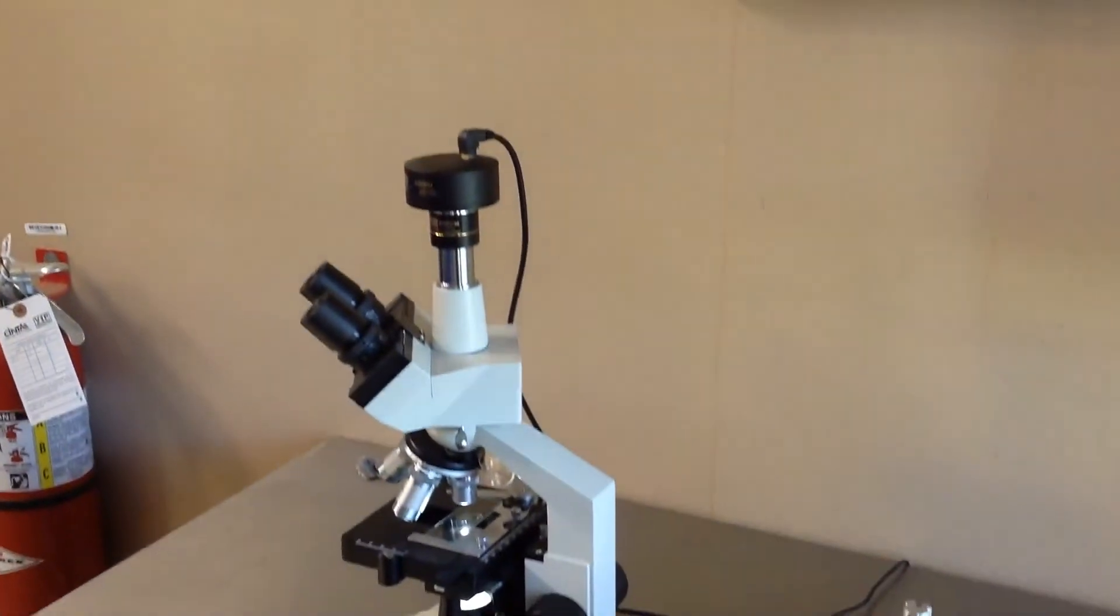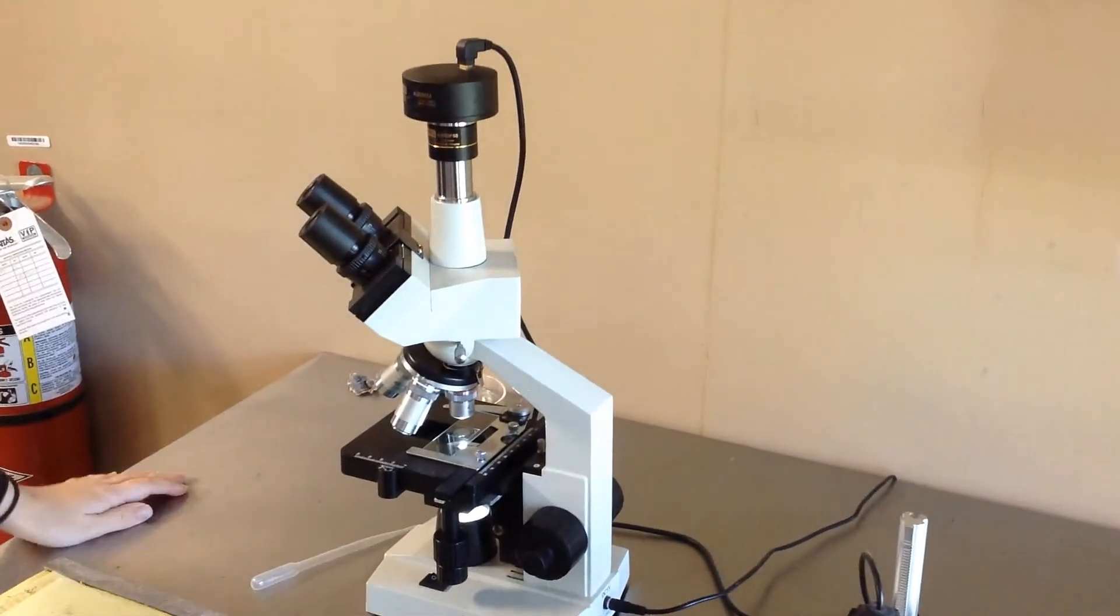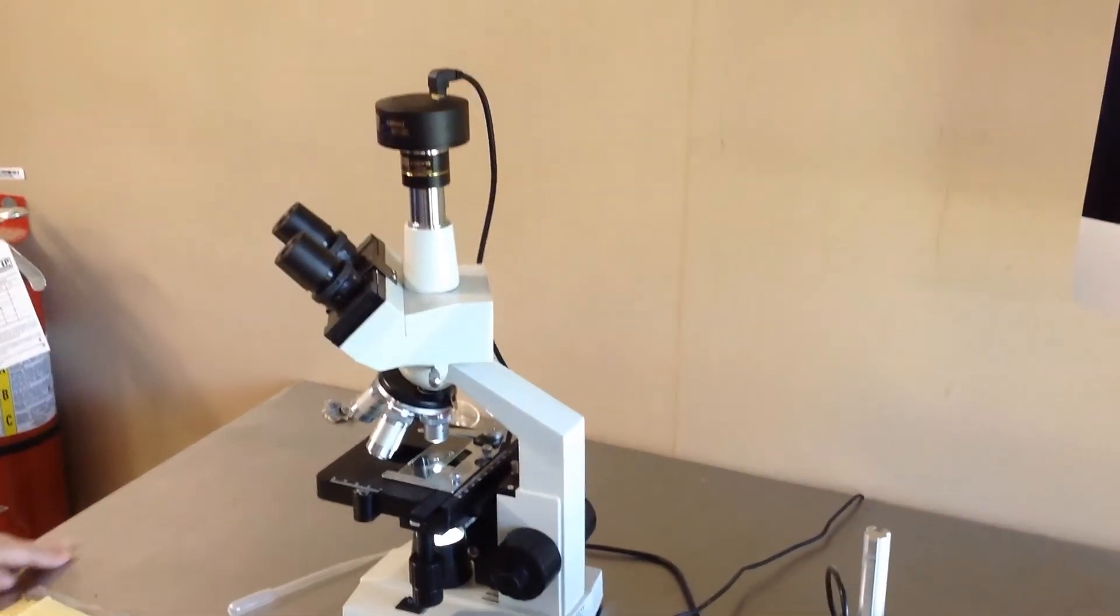On this low power setting, on this 30x, you can see things like protozoa and you can see some algae and some plants. Even without magnifying, if you took a magnifying glass or just the naked eye and you looked really close, you could see things like hydra and daphnia.